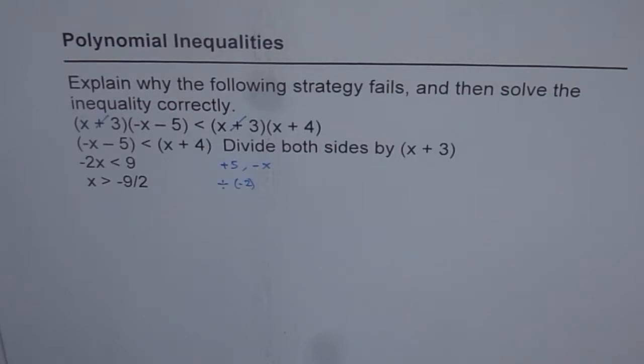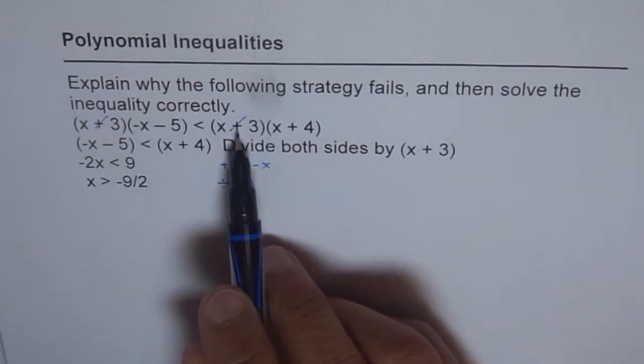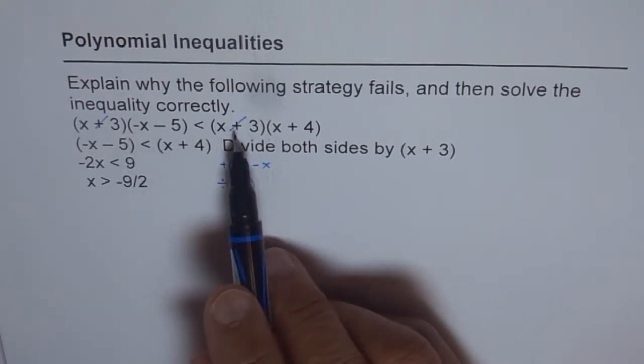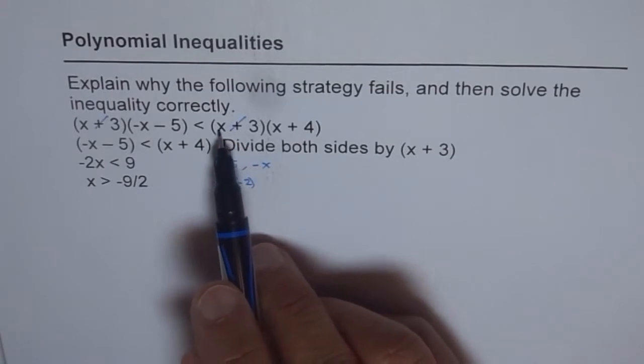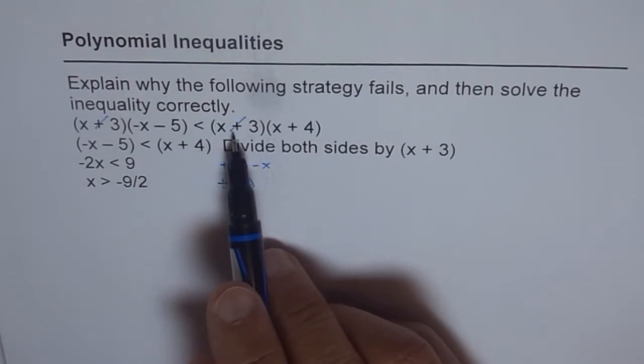Now what should I suggest to you here? The mistake is in the very, very first step, cancelling out x plus 3. Now this you could not have done even in solving equations. If you cancel it out, then you are cancelling out one of the solutions. So this is a wrong step even for doing equations.